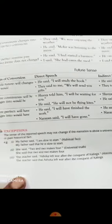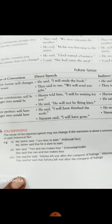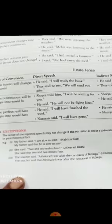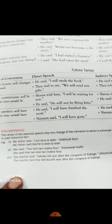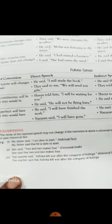Now see the exceptions. There are some exceptions. The tense of the reported speech may not change if the narration is about a universal truth or a past historical fact. For example: My father said, 'I am slow to start.' My father said that he is slow to start. Students, you have seen that 'is' does not change to past tense because this is a habitual fact.